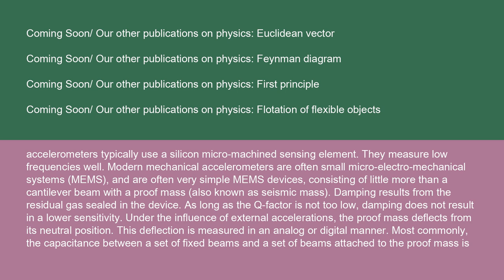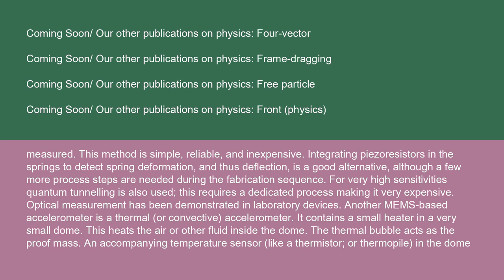Modern mechanical accelerometers are often small micro-electromechanical systems (MEMS), often consisting of little more than a cantilever beam with a proof mass, also known as a seismic mass. Damping results from the residual gas sealed in the device. As long as the Q factor is not too low, damping does not result in lower sensitivity. Under external accelerations, the proof mass deflects from its neutral position; this deflection is measured in an analog or digital manner — most commonly, the capacitance between a set of fixed beams and a set of beams attached to the proof mass. Integrating piezo resistors in the springs to detect spring deformation and thus deflection is a good alternative, though a few more process steps are needed during fabrication.